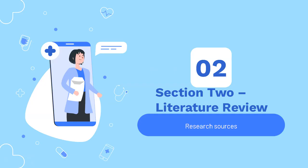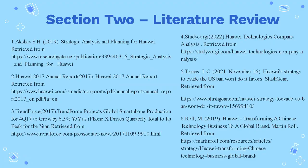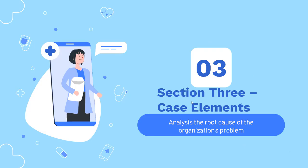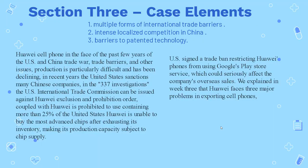Moving to Section 2, Literature Review, the main references are the following six research sources. Section 3 covers the Case Elements. Huawei's cell phone, in the face of the past few years of the U.S.-China trade war, trade barriers, and other issues, has seen production decline. Under recent United States sanctions, Huawei has faced a 337 investigation in which the U.S. International Trade Commission issued an exclusion and prohibition order against Huawei.